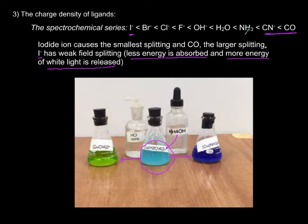This is due to charge density as you go across from iodide to carbon monoxide, charge density increases. The more charge density you have, the bigger impact you have on the splitting of the d-orbitals.